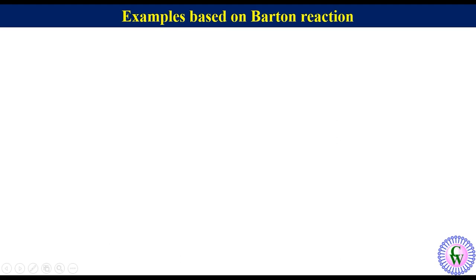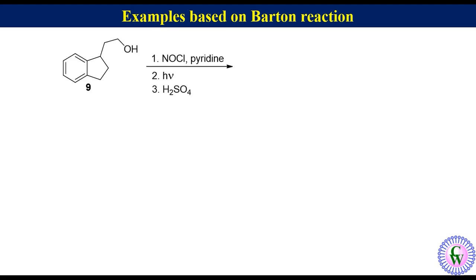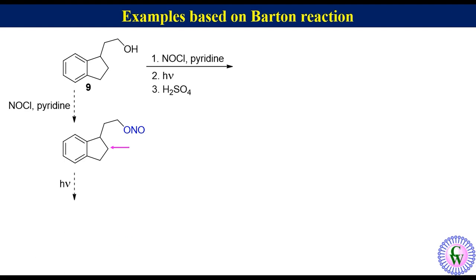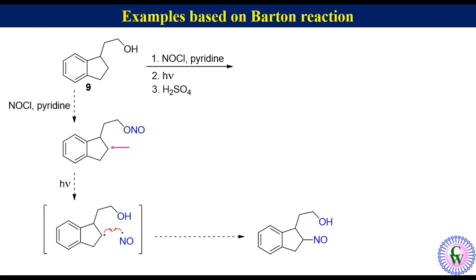Now let's find the structure of the final product formed from compound 9 after three given reaction sequences. Reaction of compound 9 with nitrosyl chloride gives the corresponding nitrite. This is the delta carbon with hydrogen. Photolysis of nitrite followed by delta hydrogen abstraction gives this alkyl radical and NO radical. These two radicals combine together to produce nitroso alcohol, which after tautomerization gives the oxime. In the presence of H2SO4, the oxime undergoes Beckmann rearrangement to produce this lactam.